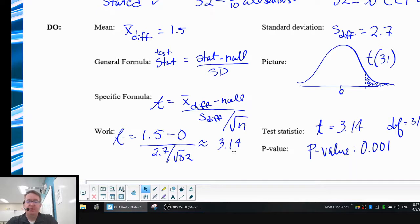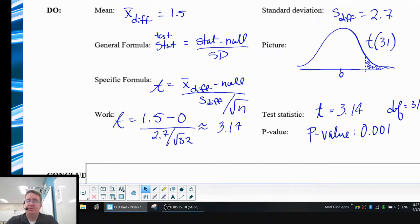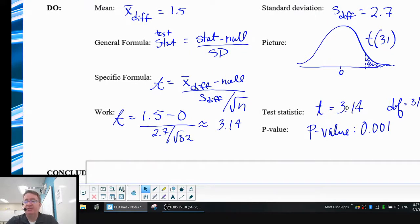The work, we plug everything, we get 3.14. No, it is not actually pi. It just happens to be a happy coincidence. When we do this, you're going to get your t-value of 3.14. Degrees of freedom is 31. And your p-value is 0.001.